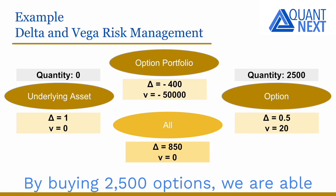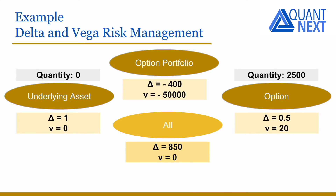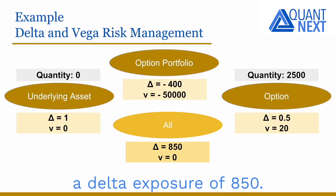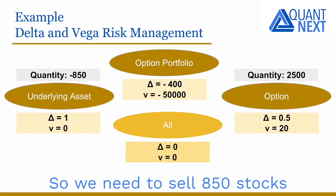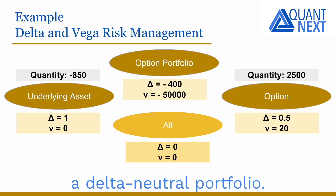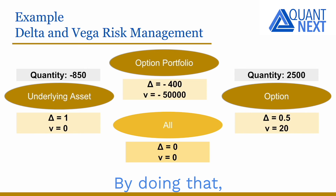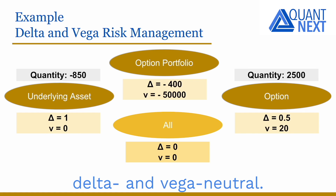By buying 2,500 options, we are able to cancel the vega exposure, and we now have a delta exposure of 850. So we need to sell 850 stocks in order to have a delta neutral portfolio. By doing that, our new portfolio is both delta and vega neutral.